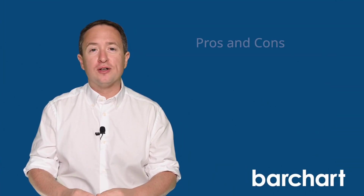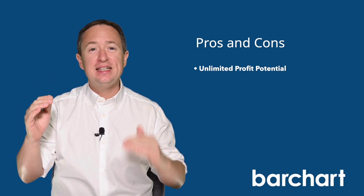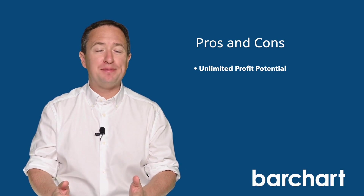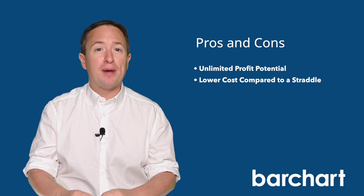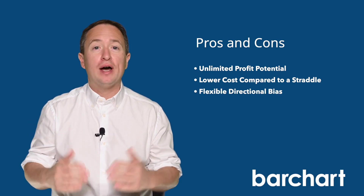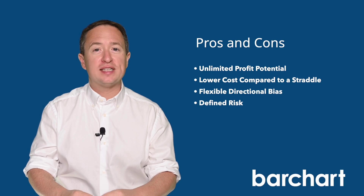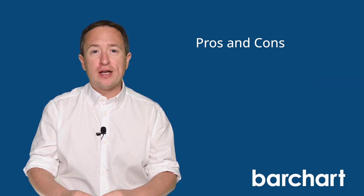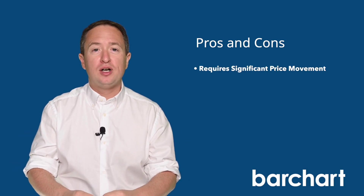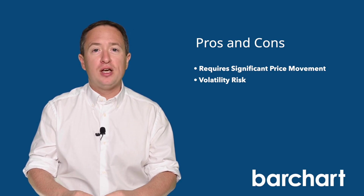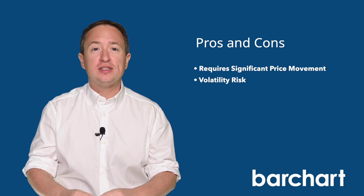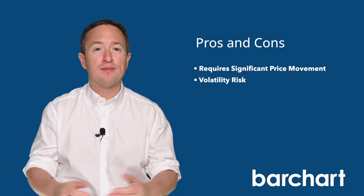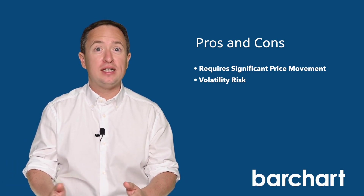The long strangle has unlimited profit potential to the upside and significant profit potential to the downside — perhaps its biggest selling point. It can also be a lot cheaper than long straddles, a similar strategy, and also enjoys a bi-directional price bias — that's to say, up or down, you have a chance of profit. Strangles also have defined risks at the onset of the trade. However, long strangles need significant price movement to profit. They profit most from high volatility, but you have to be careful on your entry point. Ideally, you'll want to enter the trade when volatility is low and you expect it to increase, perhaps during earnings season. If you enter when volatility is already high, you might pay a higher premium, reducing your potential profit, unless volatility continues to rise.